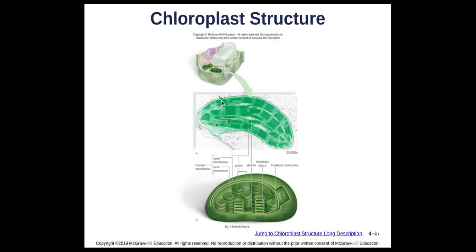Looking at the chloroplast diagram: thylakoid membranes stack like checker chips to form grana, where chlorophyll captures sunlight energy. Holding all of this in space is the stroma — the fluid part. The inputs are water, carbon dioxide, and sunlight, and the main output is glucose — a carbohydrate that acts as food for the plant.